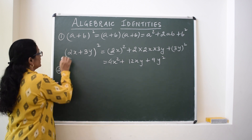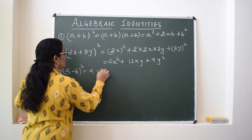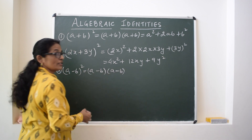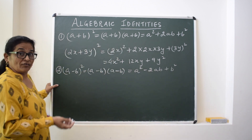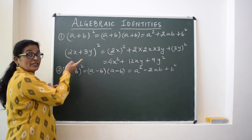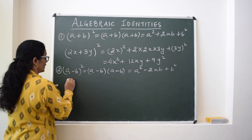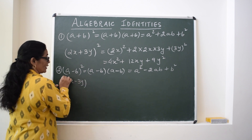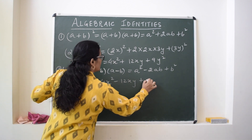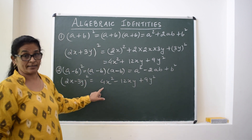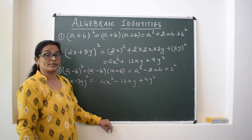Similarly, if instead of plus we have minus, the second identity is (a − b) whole square, which equals (a − b) into (a − b), and the expansion is a² − 2ab + b². Taking the same example but with a minus sign: (2x − 3y)² can be written directly as 4x² − 12xy + 9y².